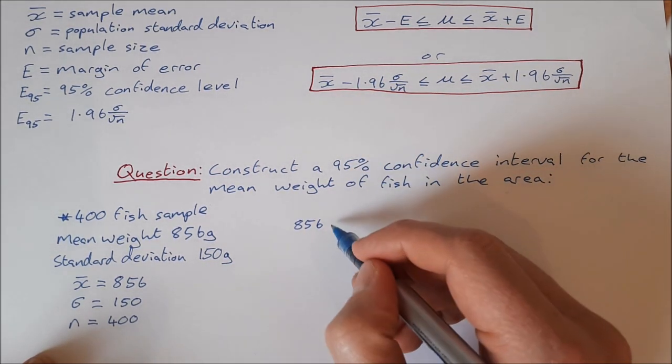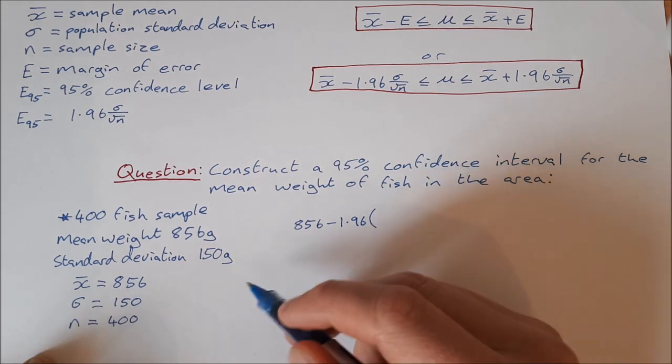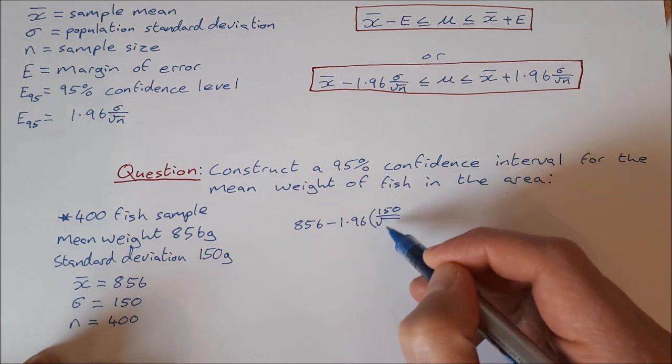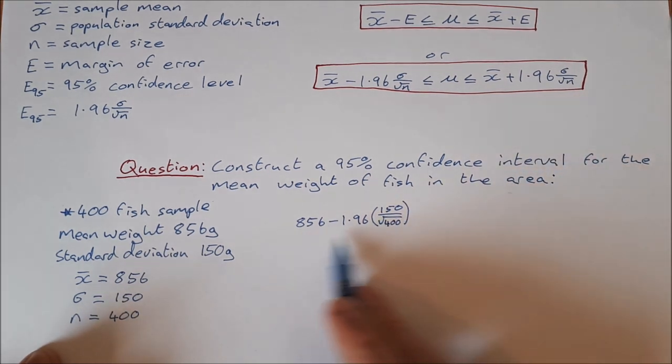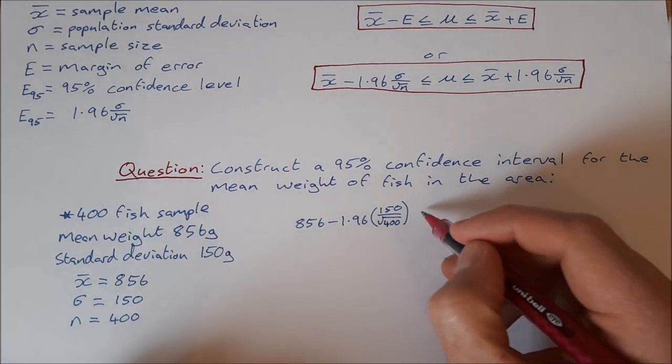Minus 1.96 times σ, which is 150, over root n, which is 400. So that's all you need there on one side.